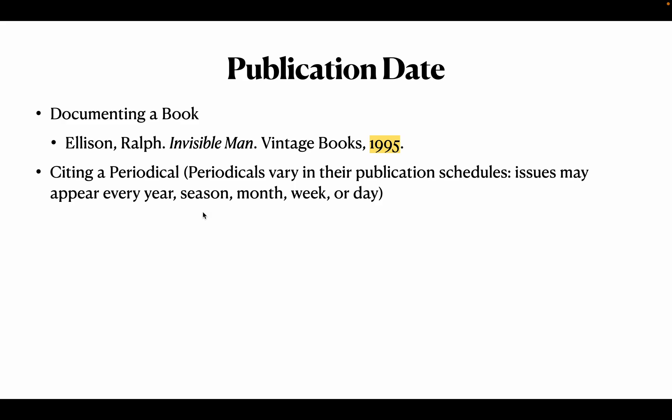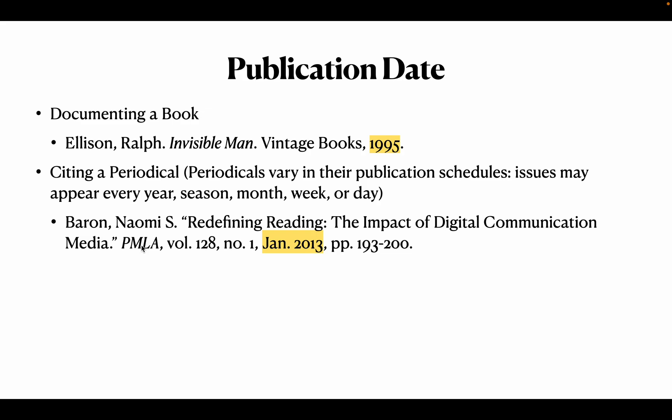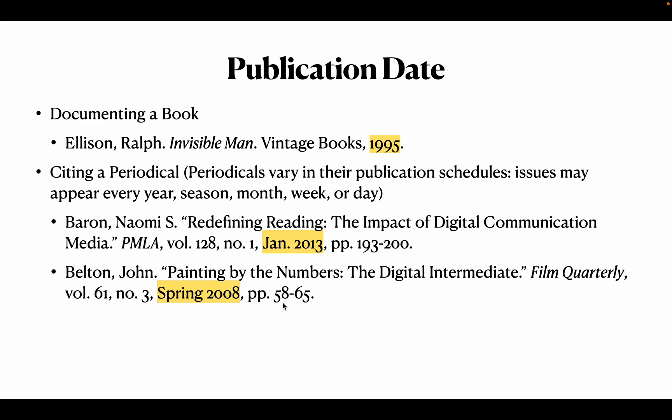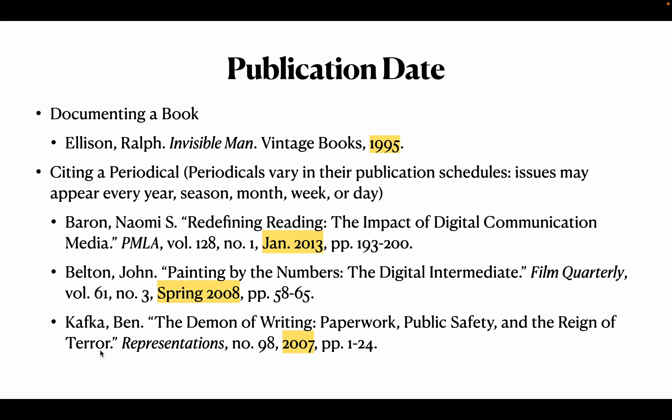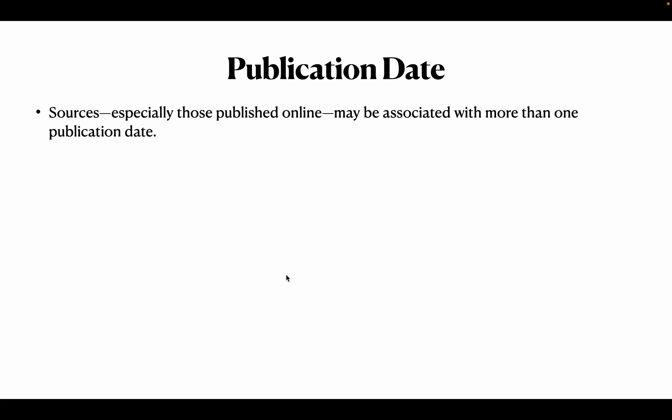Some periodicals cite only the year. Some cite a season like spring or fall. Some give month, week, or day. For example, Naomi Baran's article in PMLA gives volume and number, then Jan 2013. Film Quarterly cites publication date as spring 2008. Ben Kafka writing in Representations gives only the year, 2007.